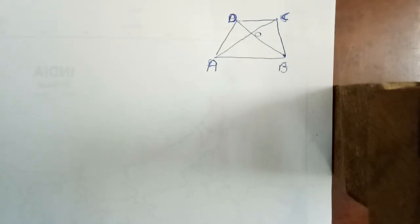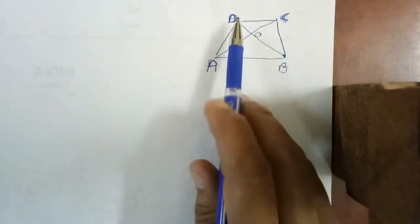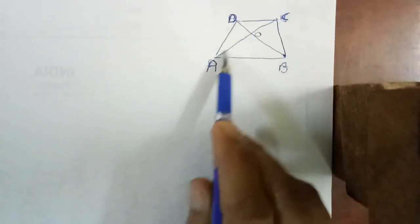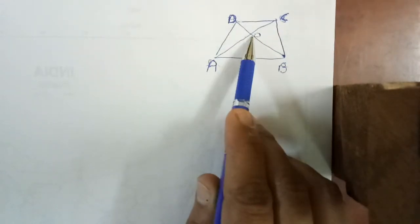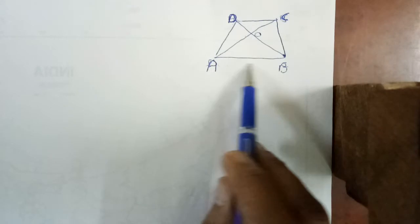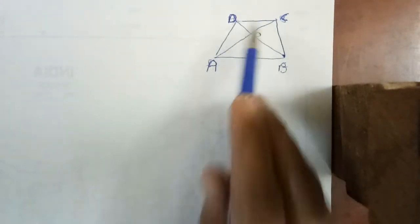Hello students, hope you are doing well. Today I will explain some doubtful questions from 6.4. In a trapezium ABCD, AB is parallel to CD, and the diagonals AC and BD intersect each other at point O. It is given that AB is equal to double of CD.